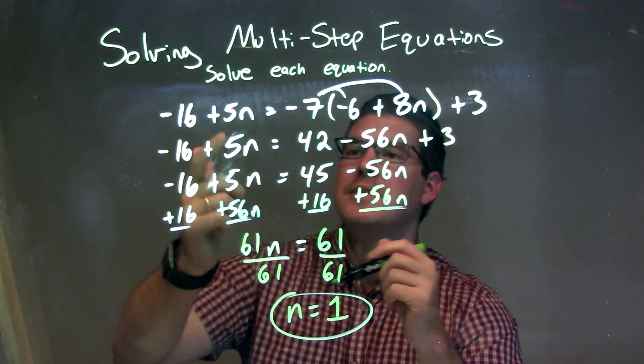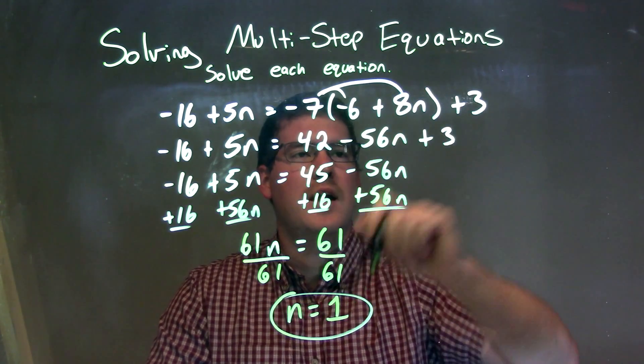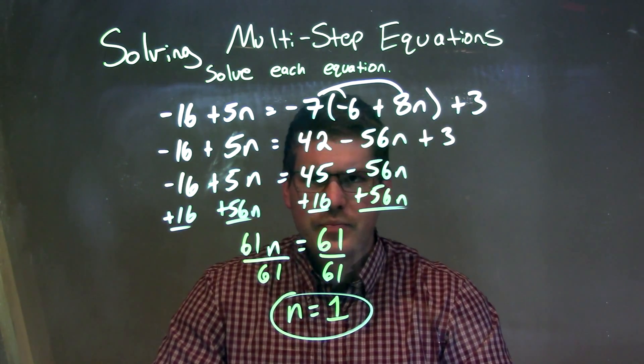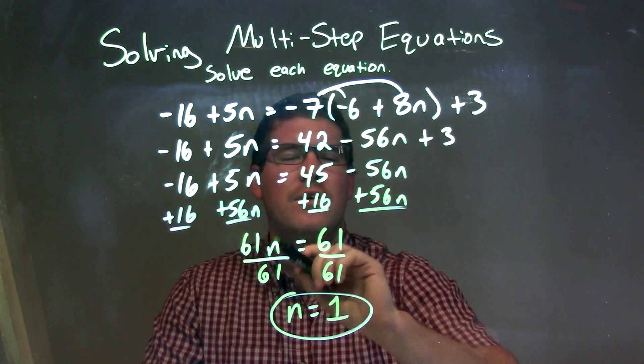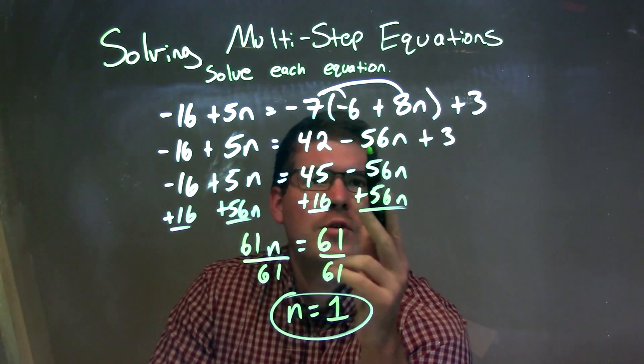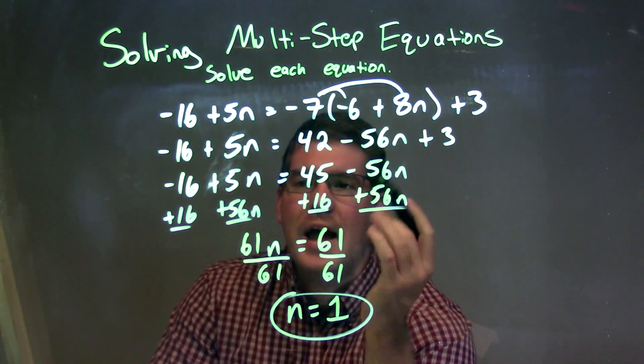Let's recap. We're given negative 16 plus 5n equals negative 7 times (negative 6 plus 8n) plus 3. I want to simplify each side of the equal sign, so I distribute the negative 7 across both parts, giving me 42 minus 56n. I then combine the 42 and the 3 to get 45.